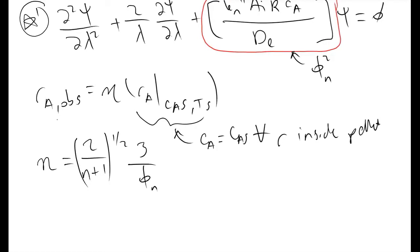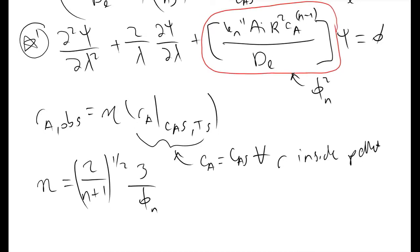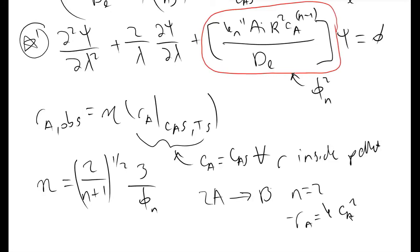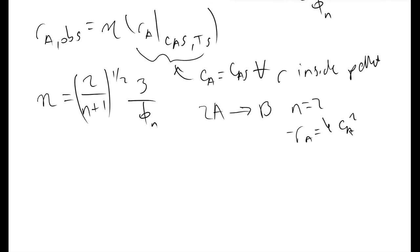The steps to evaluate the observed rate of reaction are: first, evaluate your Thiele modulus using the given variables or a tabulated value. Once you know your Thiele modulus and reaction order, compute η. For example, for an elementary reaction 2A → B, n = 2 and −R_A = K · C_A². You would plug in your Thiele modulus, find the effectiveness factor, and plug into the observed rate equation assuming all C_A equals C_AS, giving you the expected observed rate.